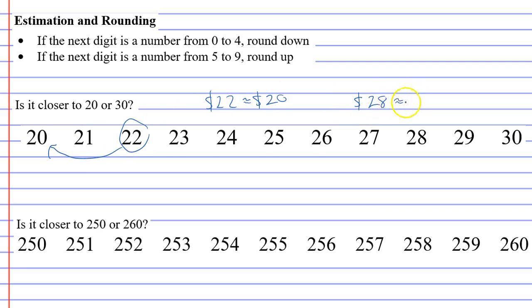You'll notice that the twenty eight is actually closer to the thirty than it is to the twenty, so in this case we're going to round up. With the twenty two we rounded down and with the twenty eight we rounded up. One that gets people quite confused is what if you have twenty five dollars?